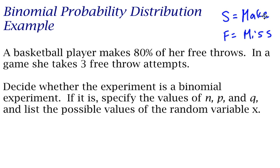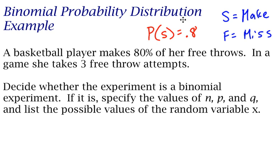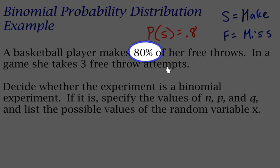Because it tells us she makes 80% of her free throws, the probability of a success in this case is 80%. That goes along with the third condition: the probability of a success is the same for each trial. In this case, the probability of a success is always 0.8 or 80%, because she is an 80% free throw shooter.